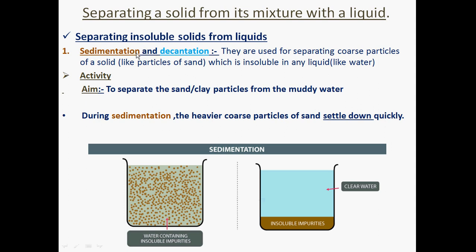A natural example of sedimentation can be seen in oceans and lakes. When water comes from a mountaintop, it carries some amount of sand, clay, and silt along with it. When it reaches the oceans and lakes, the particles of clay, sand, and silt slowly settle down by the action of gravity at the river bed.